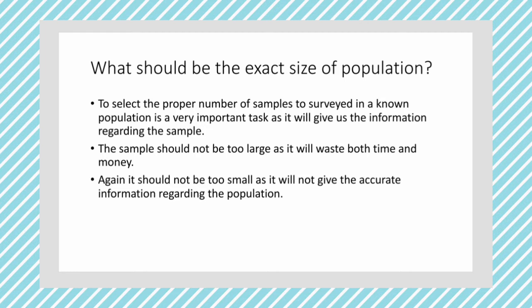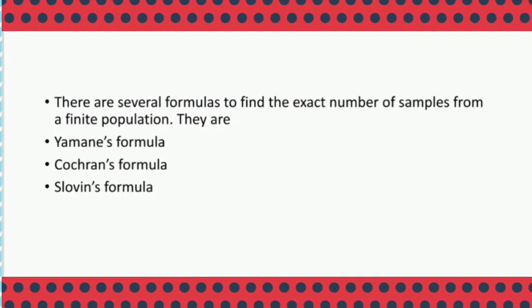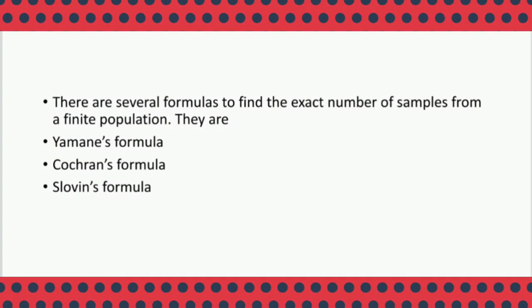There are several formulas to find the sample from a finite number of population: Yamane's formula, Cochran's formula, and Sloven's formula. These three formulas help us find out the exact number of samples to be surveyed in case of any finite population. Let us first discuss Yamane's formula.